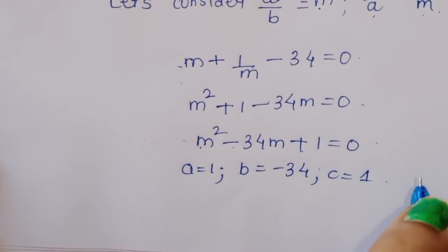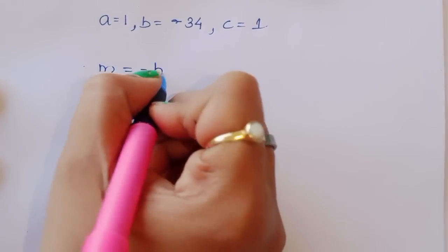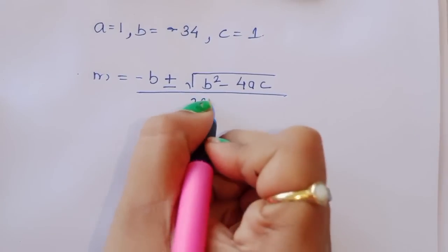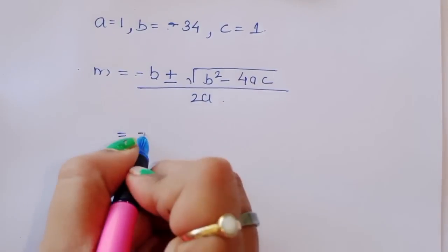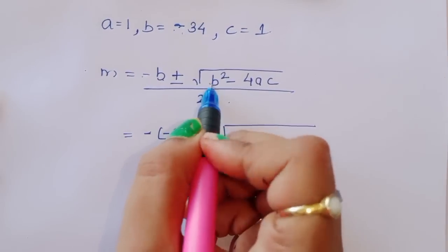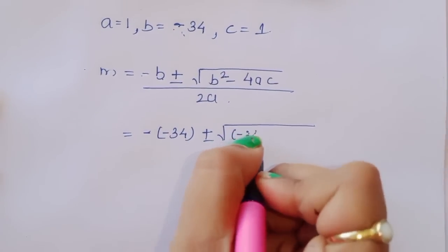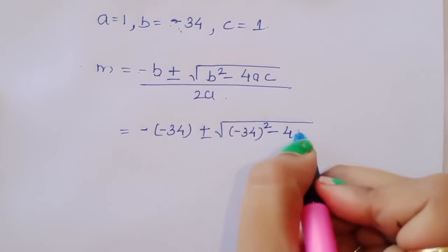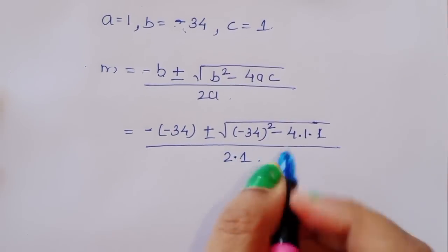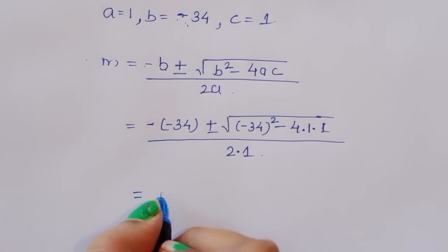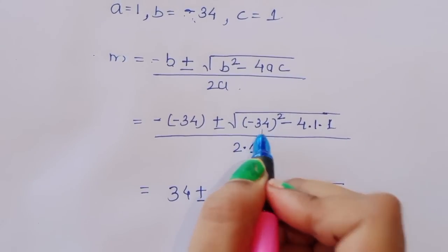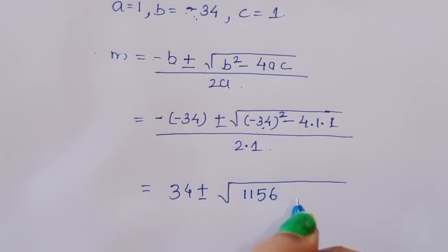We can find the value of m using the quadratic formula: m equals minus b plus or minus square root of b squared minus 4ac, all upon 2a. Substituting: minus b is 34, b squared is 34 squared, minus 4 times 1 times 1, divided by 2 times 1.